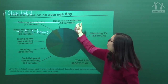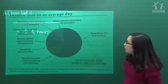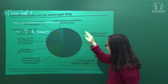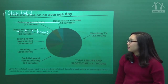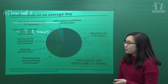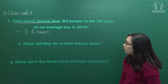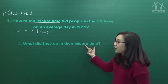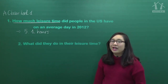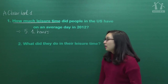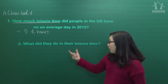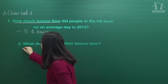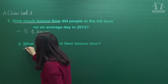Other leisure activities and watching TV - we have 7 activities total. So now you answer: what did they do in leisure time? Họ làm gì vào thời gian rảnh rỗi - các bạn phải liệt kê được 7 hoạt động. They did: reading, socializing and communicating, using computer, doing sports and exercise, relaxing and thinking, watching TV, and other leisure activities.